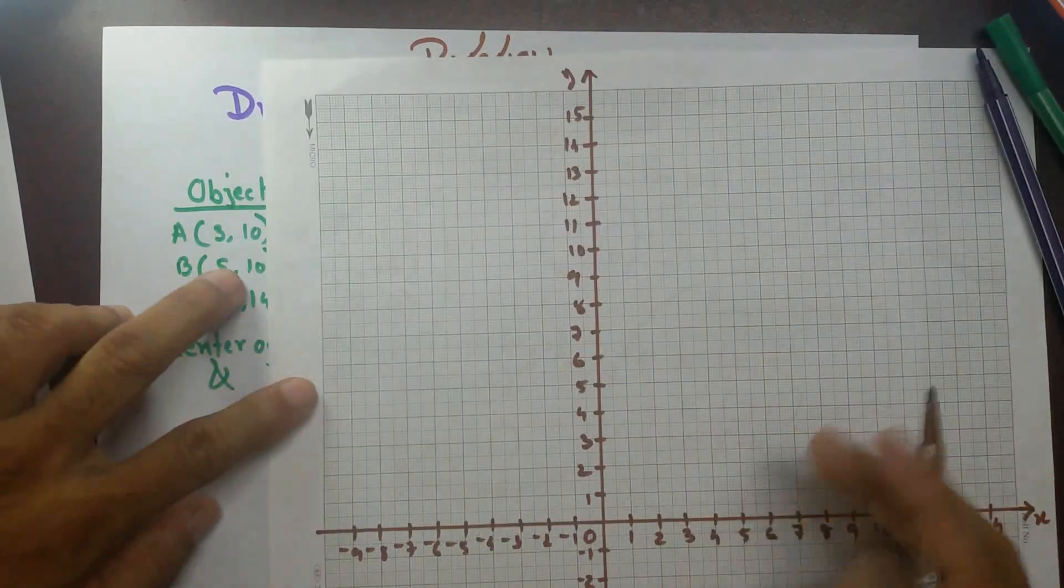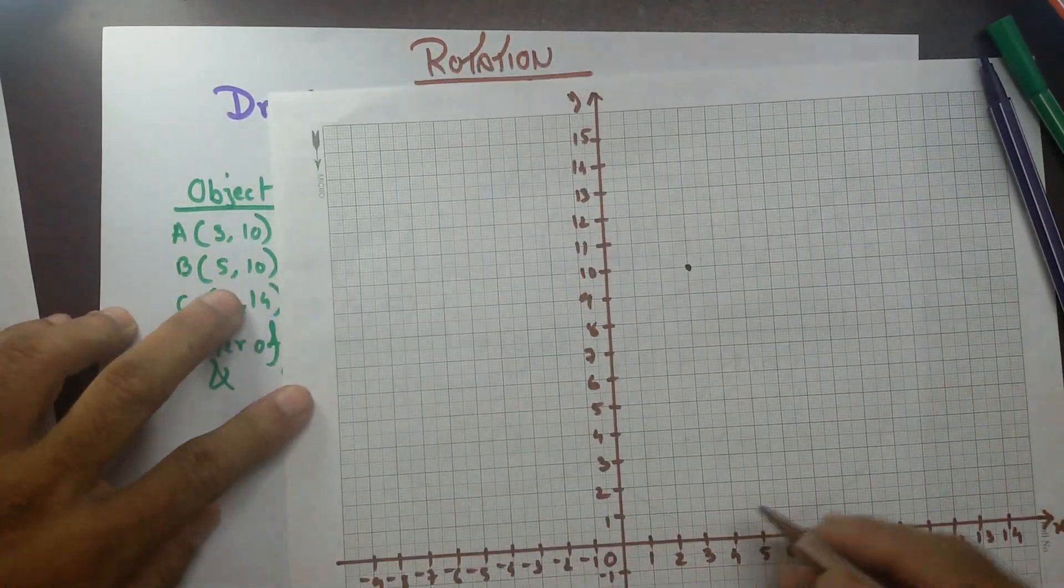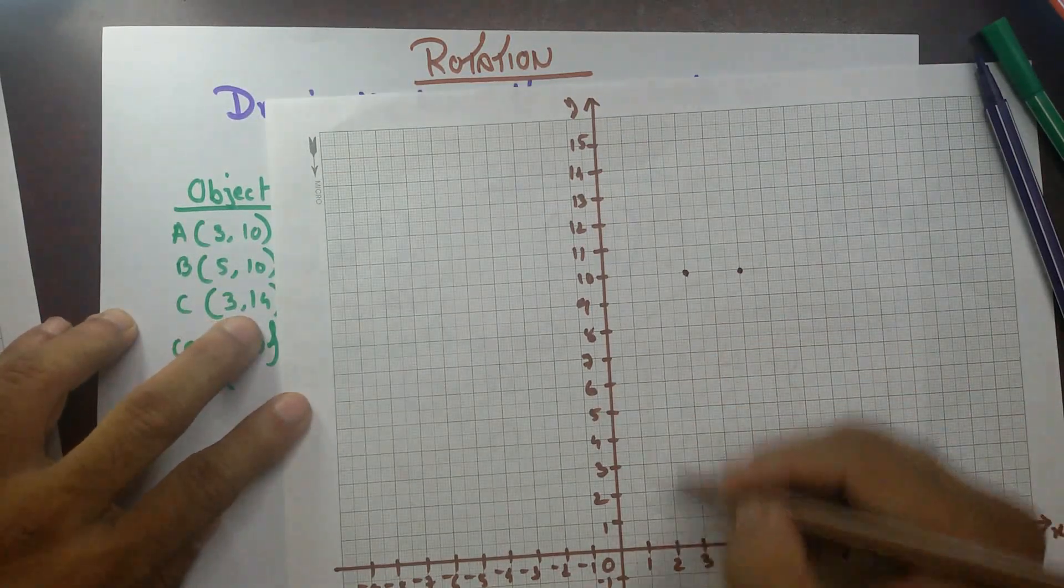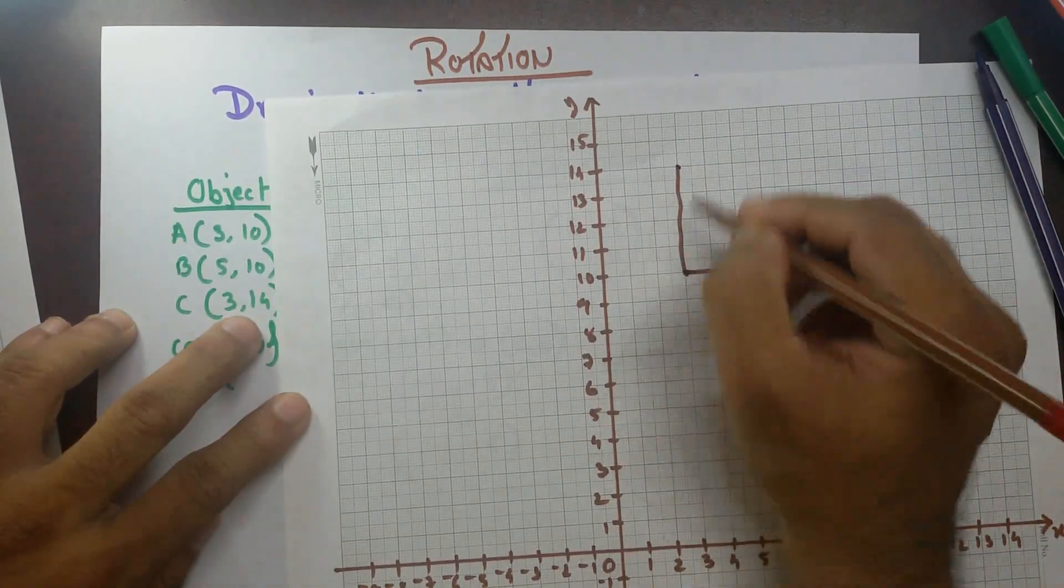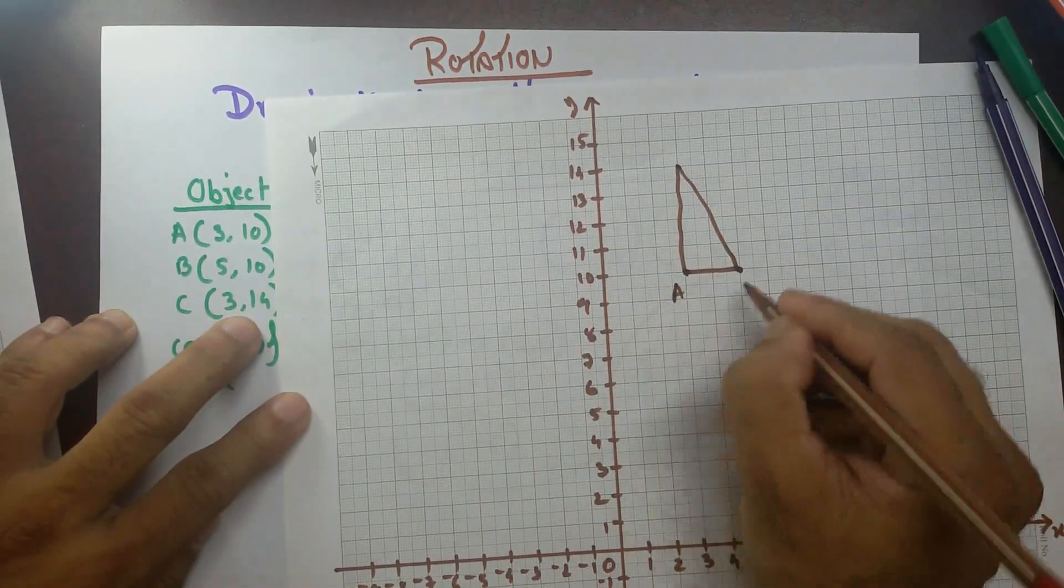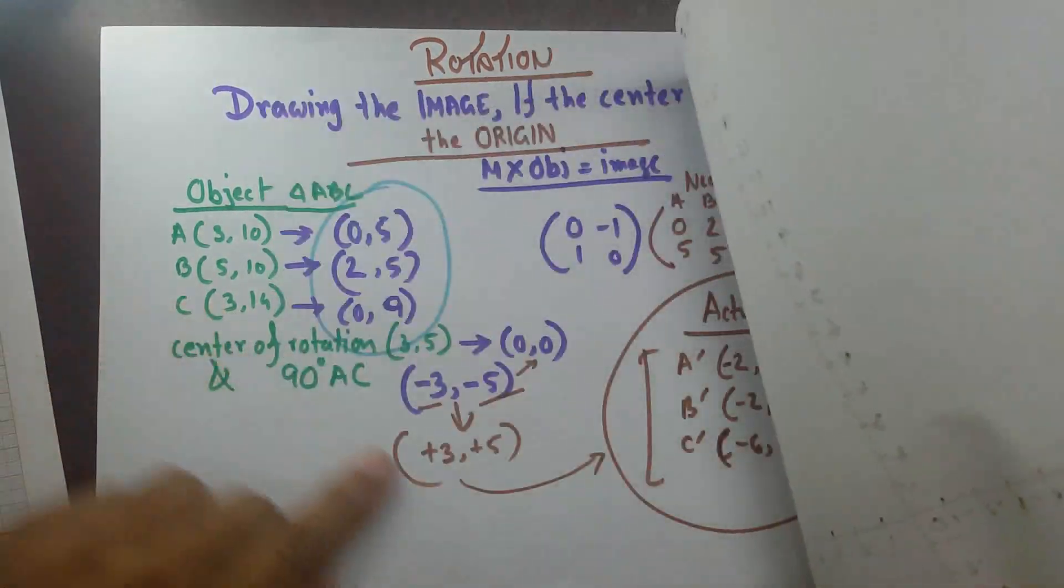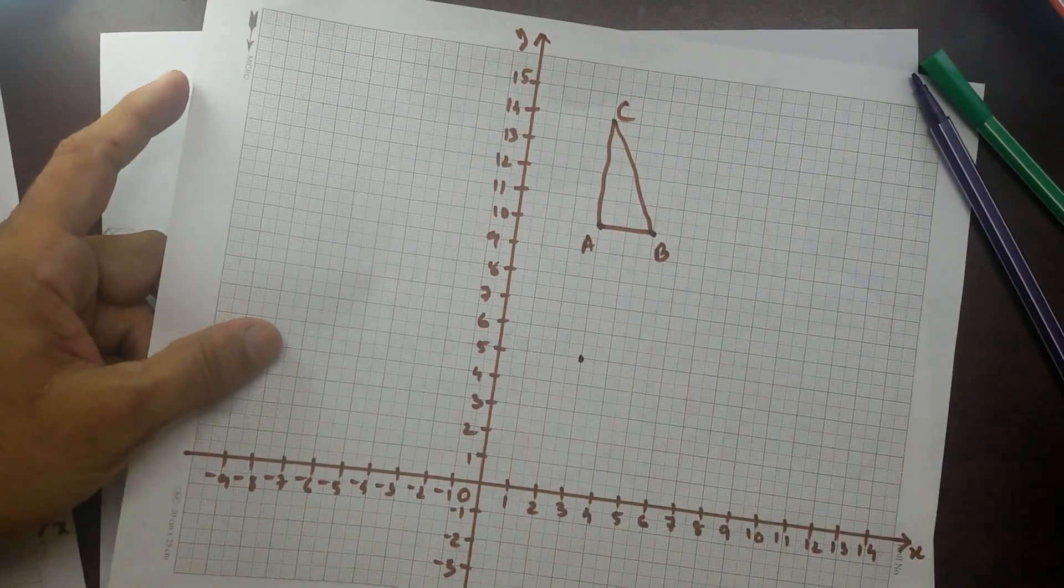Object was 3,10. So 3,10 right over here. And then 5,10 is over here. And then 3,14. 3,14 is right over here. So this is my A, B, C. And the center was 3,5. So 3,5 right over here.